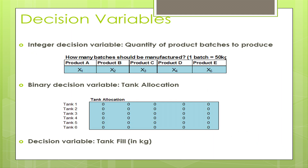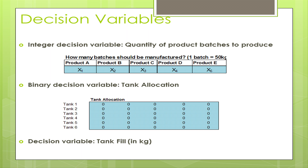Our decision variables are the quantity of product batches that can be produced. Products can only be manufactured in batches of 50 kilograms each, and the formula is given in kilograms. We also have a binary decision variable for tank allocation, since products cannot share the same tank — they would be blended together. The tank must be filled in kilograms up to its capacity. One constraint requires purchase orders in batches to be equal to or more than the minimum demand, and the tank allocation linking constraint allows only one product per tank at a time.